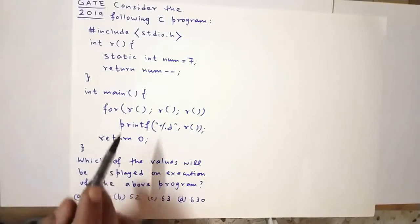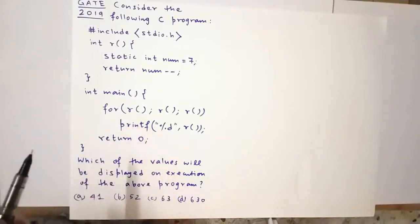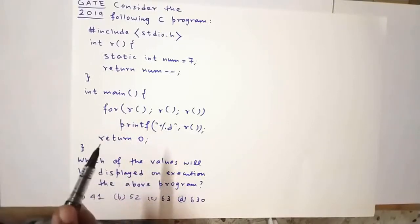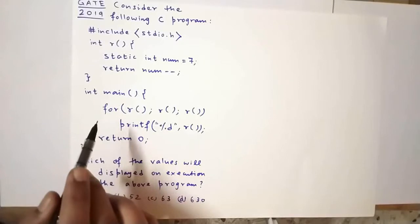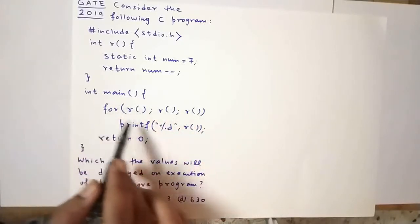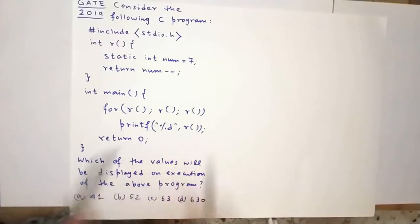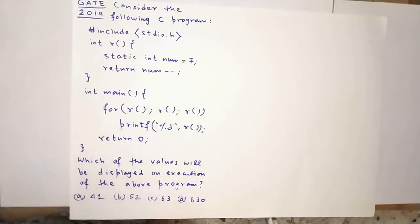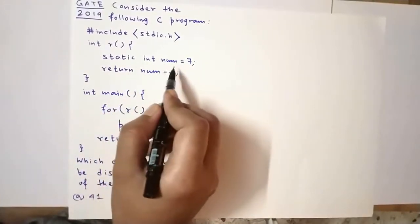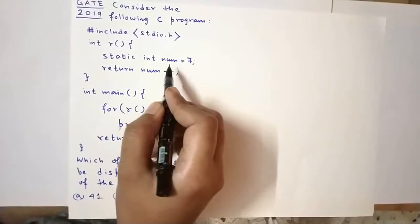Since main is the starting point of execution, we will begin our analysis with the for loop given here, because this is the first line in the main method. Before we proceed, let's discuss a thing or two about local static variables. We have one in the function r — static int num equal to 7.